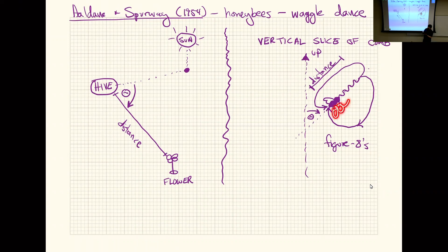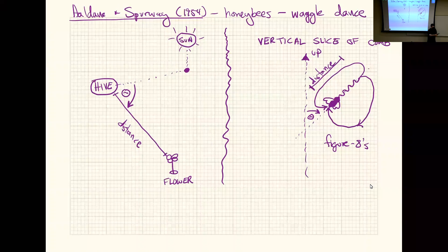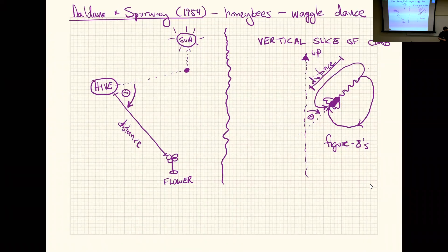If you get good at it, you can start reading them. Some colleagues of mine study bees, and they can look at these and say, yeah, she's dancing for a patch that's about three kilometers that way. Other bees will follow along behind her. You'll see a cluster of them all around. Those will be the ones that after they follow her for enough time, will go off and fly off.